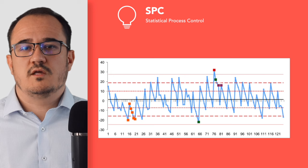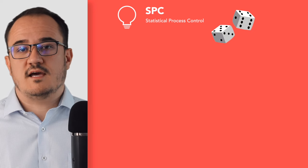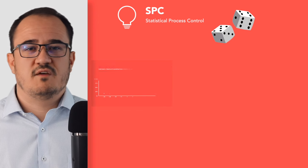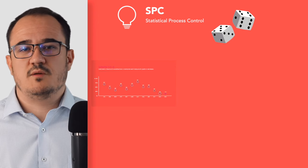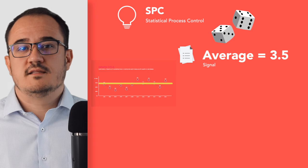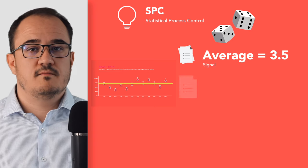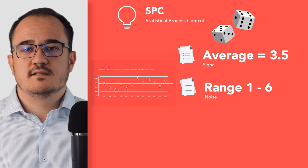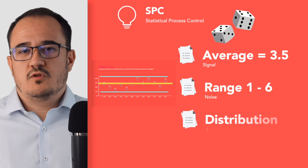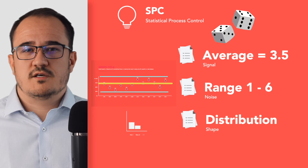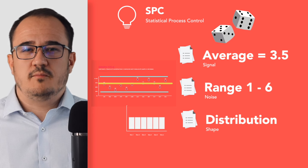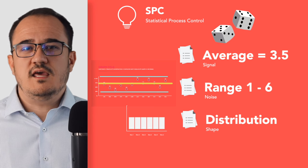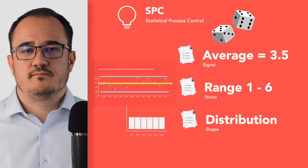For example, we can use a random number generator called a six-sided dice. There are many things we know about this process. First, the average is 3.5 — this will be called the signal. Secondly, the range is between 1 and 6 — this is also called the noise. And we know one more thing: the distribution, or the shape. It will be an equal distribution for every number; each number has an equal chance of occurring over time.